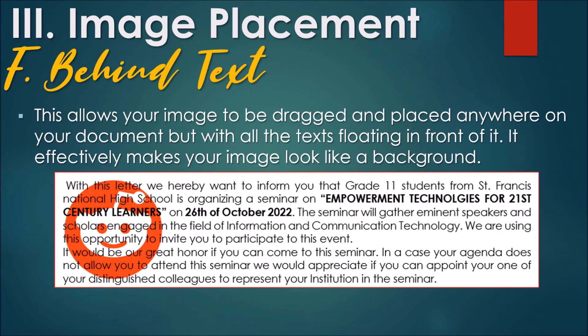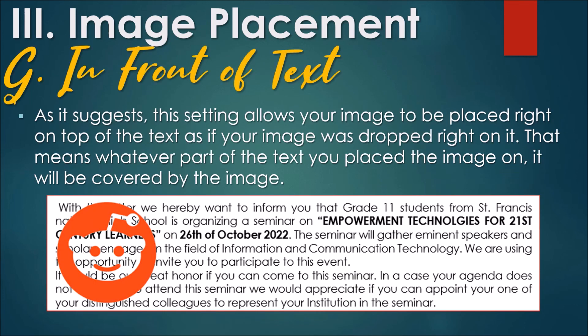F. Behind Text — This allows your image to be dragged and placed anywhere on your document, but with all the text floating in front of it, effectively making your image look like a background. G. In Front of Text — As it suggests, this setting allows your image to be placed right on top of the text, as if your image was dropped right on it. That means whatever part of the text you placed the image on will be covered by the image.